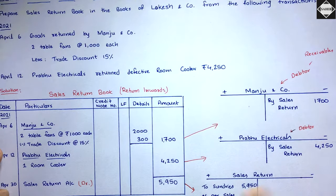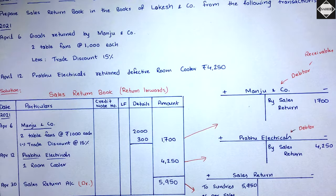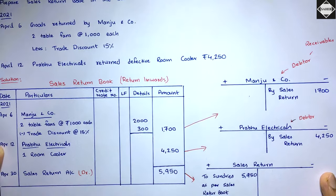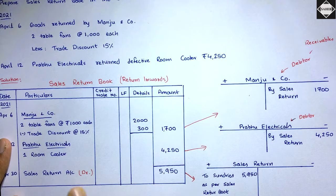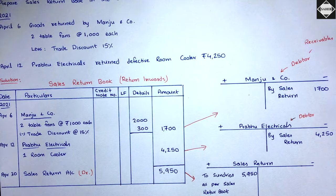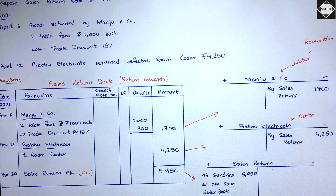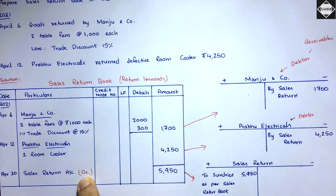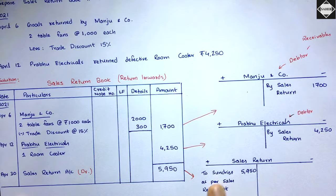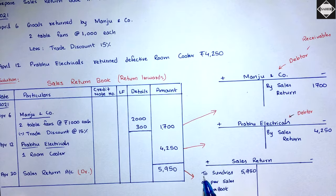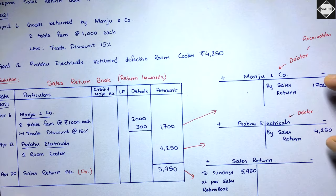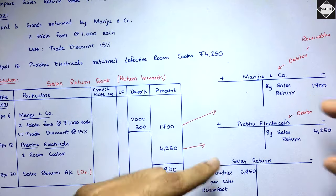The periodic total of 5,950 goes to the sales return account. Sales return is increasing since it has taken place, and sales return has debit balance — opposite to sales — so you debit it. You write 'to sundries as per sales return book' or 'to total as per sales return book' — 5,950. The sum of the two customer credits (1,700 + 4,250) equals 5,950 on the debit side, completing the double entry — debit equals credit.